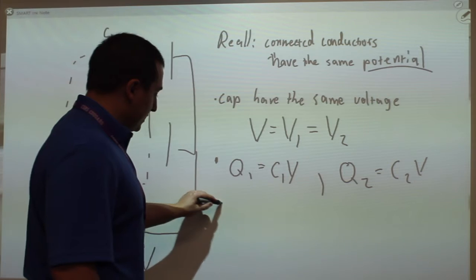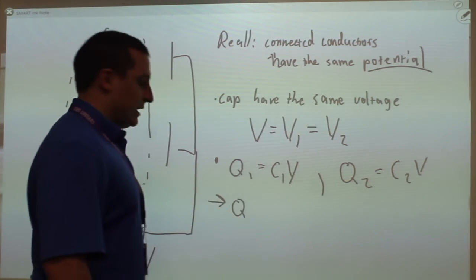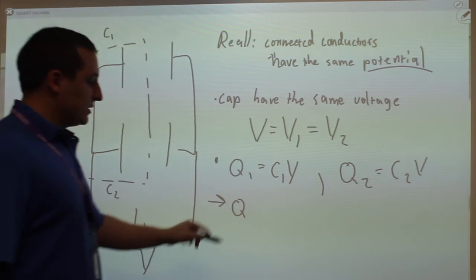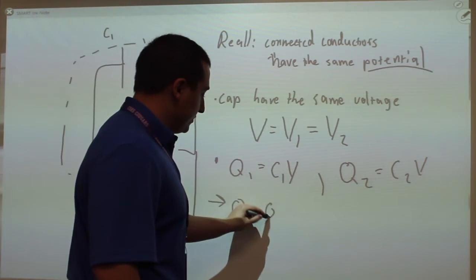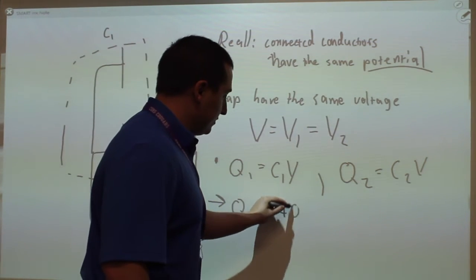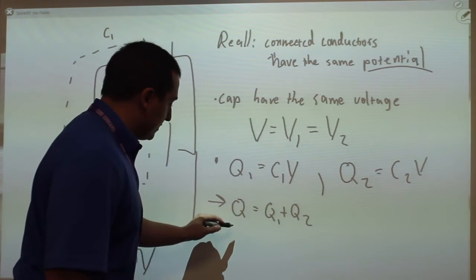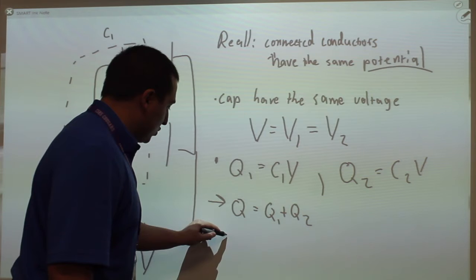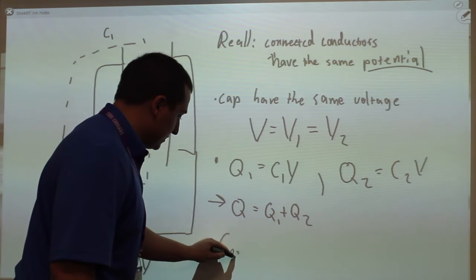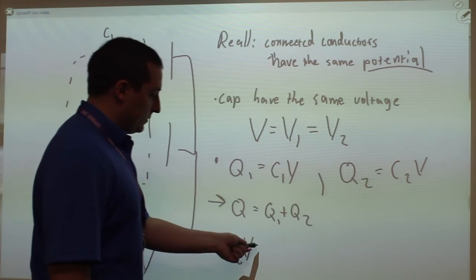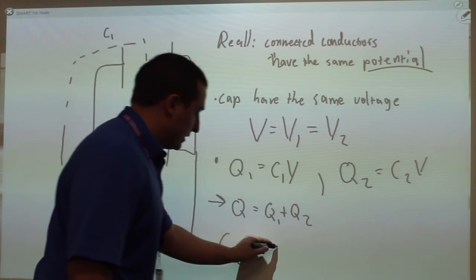So then the total charge that has to move off the battery onto the capacitors is the sum of the two, Q1 plus Q2. And so I can define some equivalent capacitance, CEQ, which is the same.